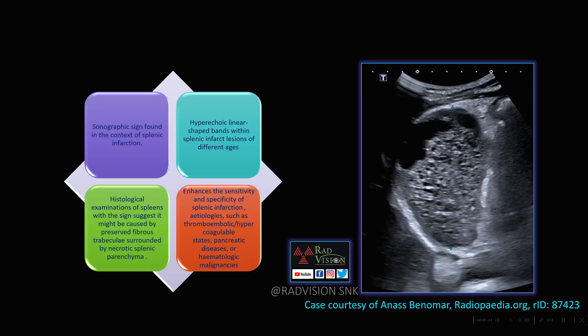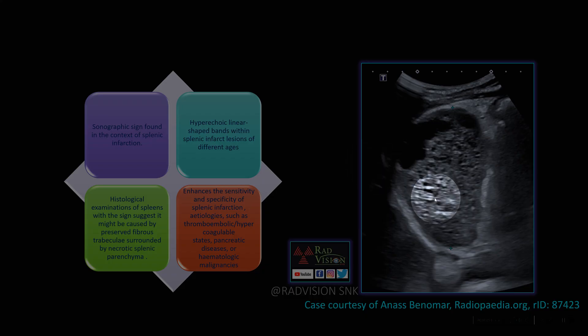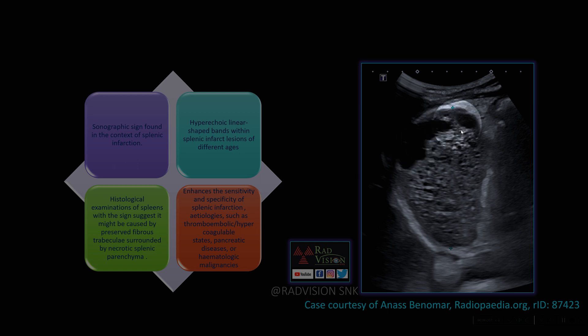Next case — what is the bright band sign? This is a case of splenic infarction (case contributed from Radiopaedia; thanks to Dr. Anas Bin Omar). In the bright band sign, these bright bands are nothing but preserved fibrous trabeculae, whereas the hypodense areas represent necrosis and hemorrhage.